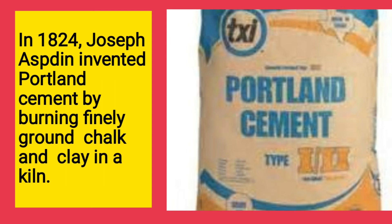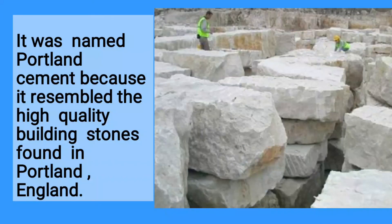It was named Portland cement because it resembled the high-quality building stones found in Portland, in England. You can see the picture of Portland stones, which is called a quarry.